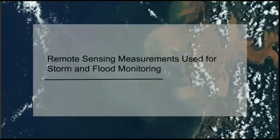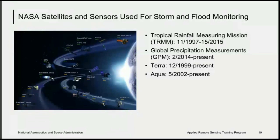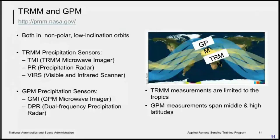To start, what remote sensing measurements are useful for storm and flood monitoring? NASA has a suite of satellites, and four key ones are: first, the Tropical Rainfall Measuring Mission — TRMM — launched in 1997, flew for more than 17 years, and ended in April 2015; second, the new Global Precipitation Measurement Mission — GPM — launched in February 2014 as an improved follow-on to TRMM; and two satellites, Terra and Aqua, which provide Earth Observing System measurements covering more than 15 years of data. These four satellites are used predominantly for both storms and flood monitoring.